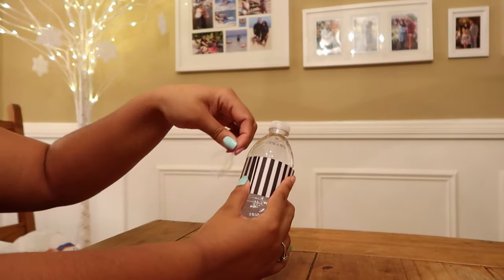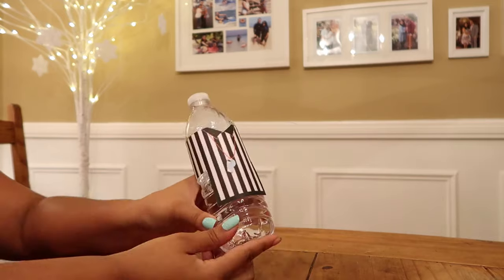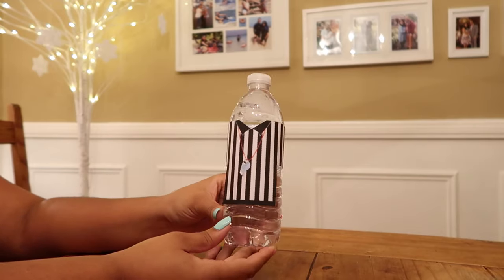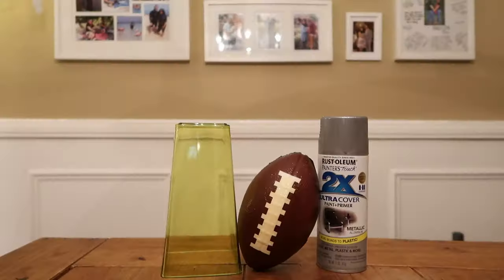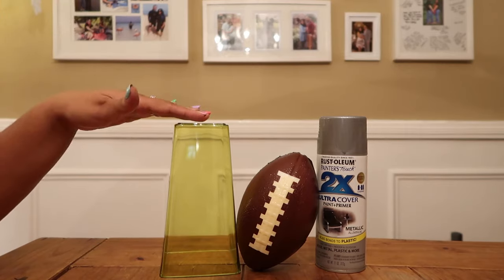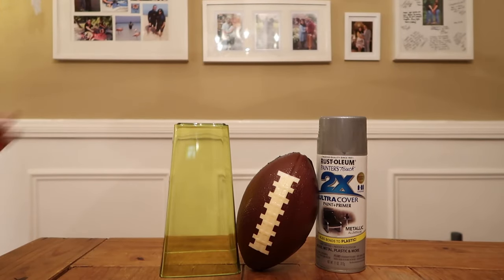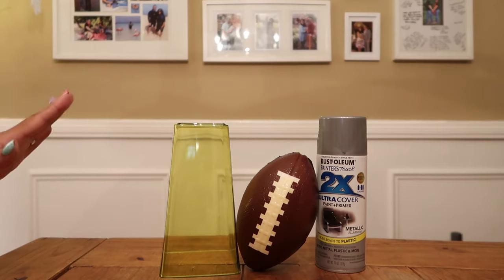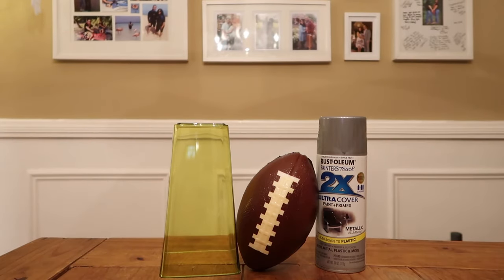For this next DIY we're going to be making our very own Lombardi trophy. For this DIY we're going to need a plastic vase, I picked this one up from the Dollar Tree. I also picked up this foam football from the Dollar Tree and you need a foam football for this DIY, I'm going to show you why in a minute.